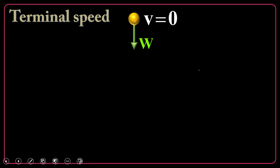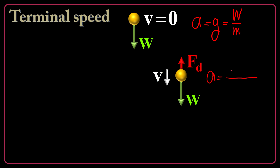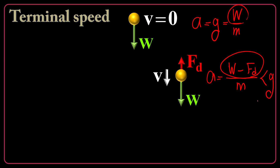Terminal speed in free fall: I release an object from rest. From rest means there is no drag force, because drag force is highly dependent on speed — no speed, no drag force. So the acceleration of the object is g, because g is the net force divided by mass, and the net force is only W. But as the object speeds up, a drag force appears opposing W, so the acceleration becomes less than g.